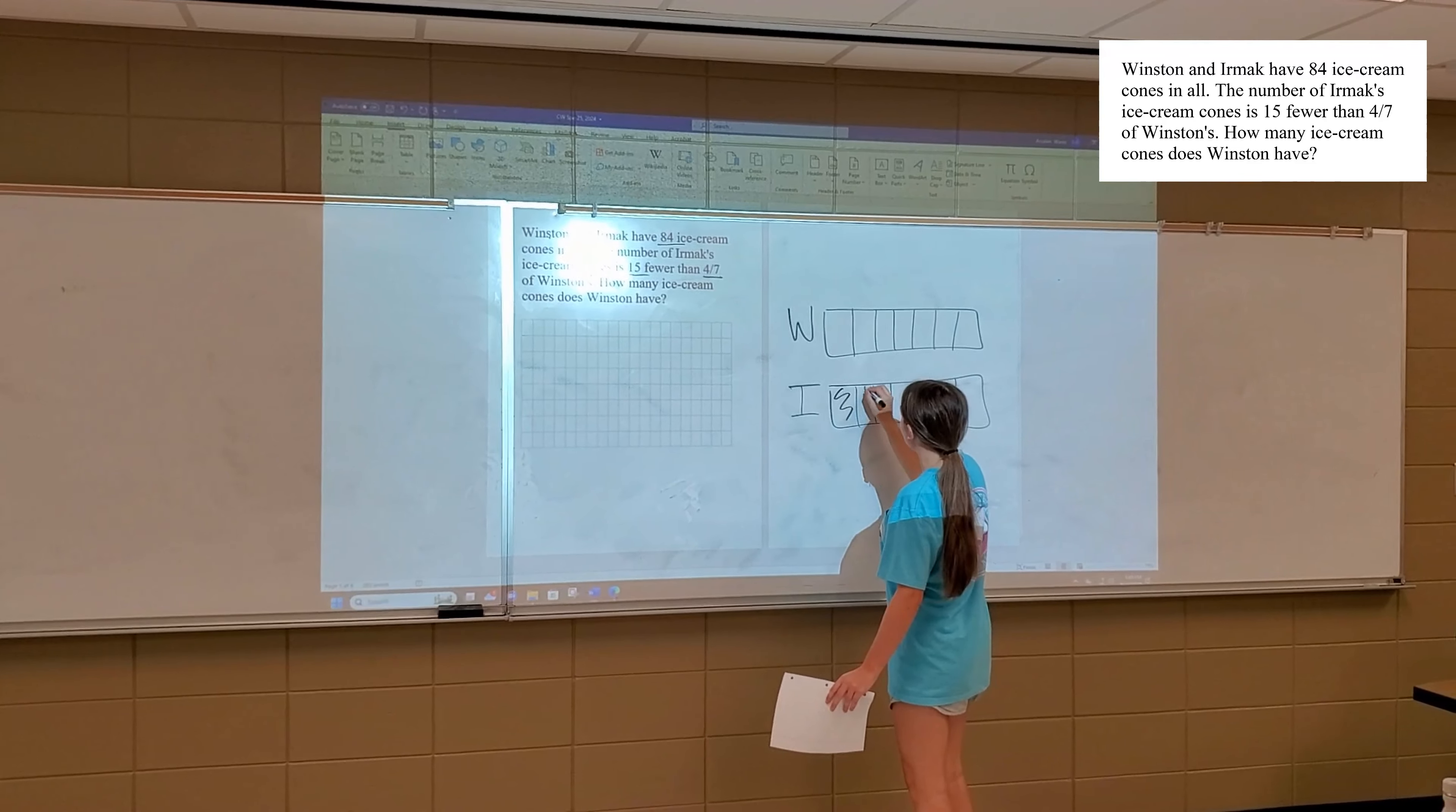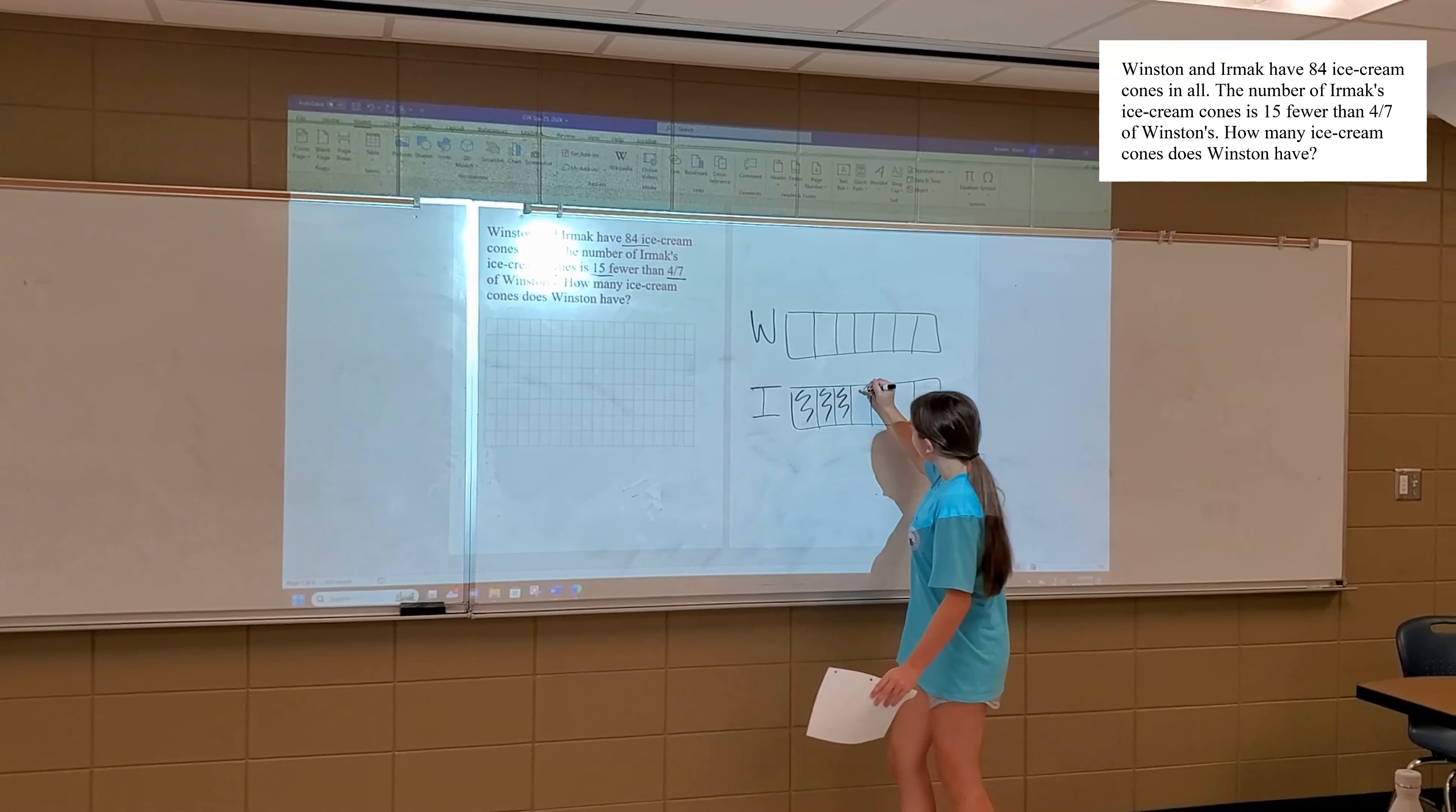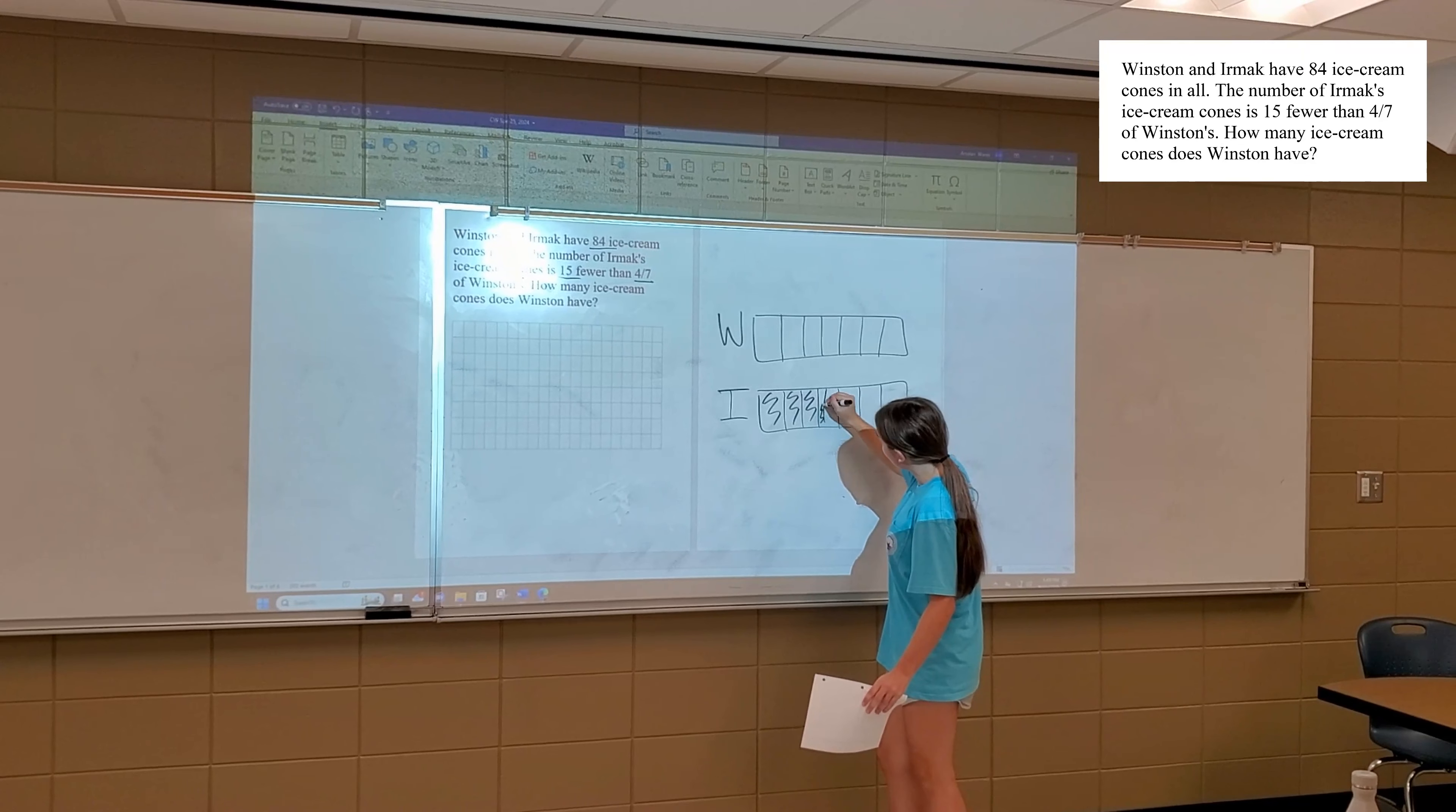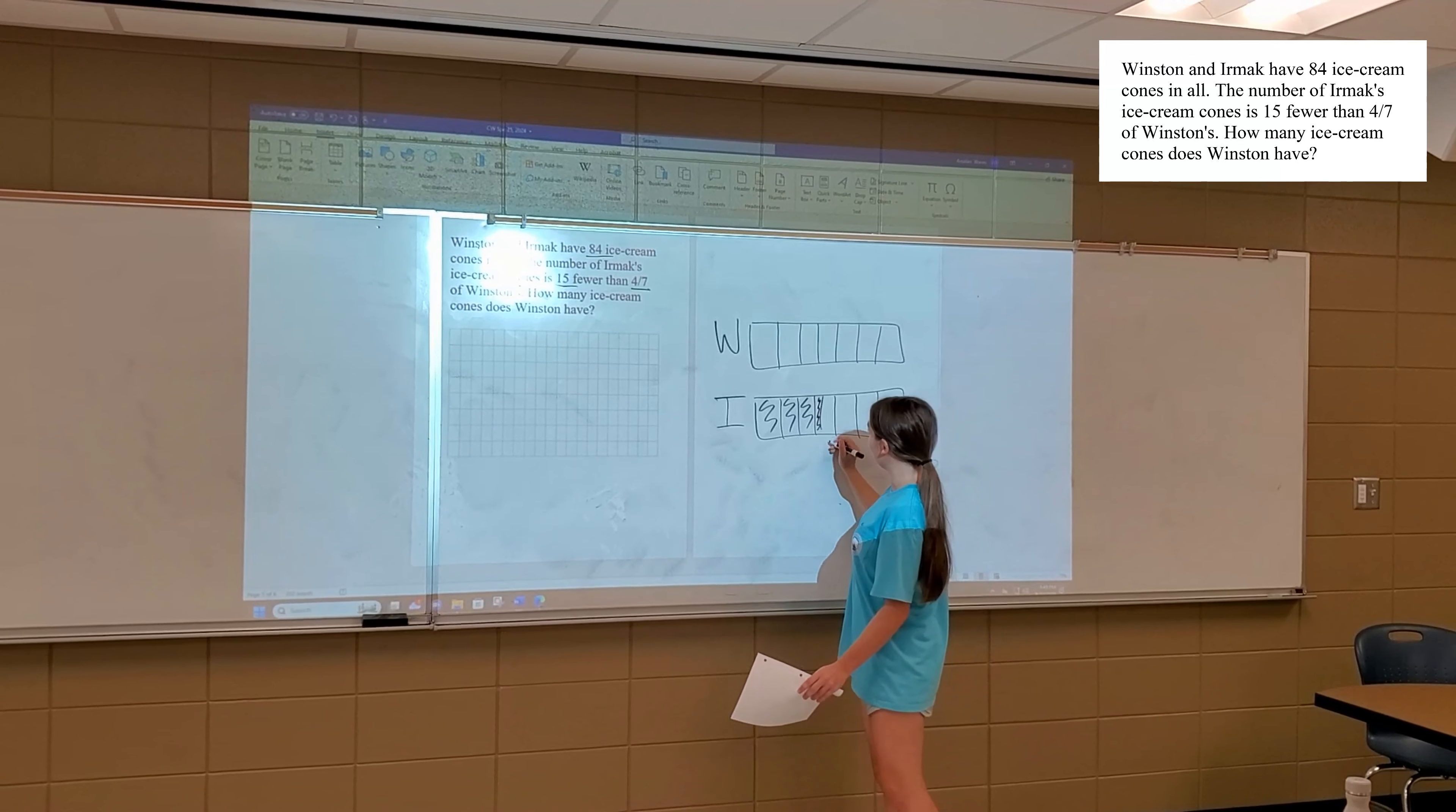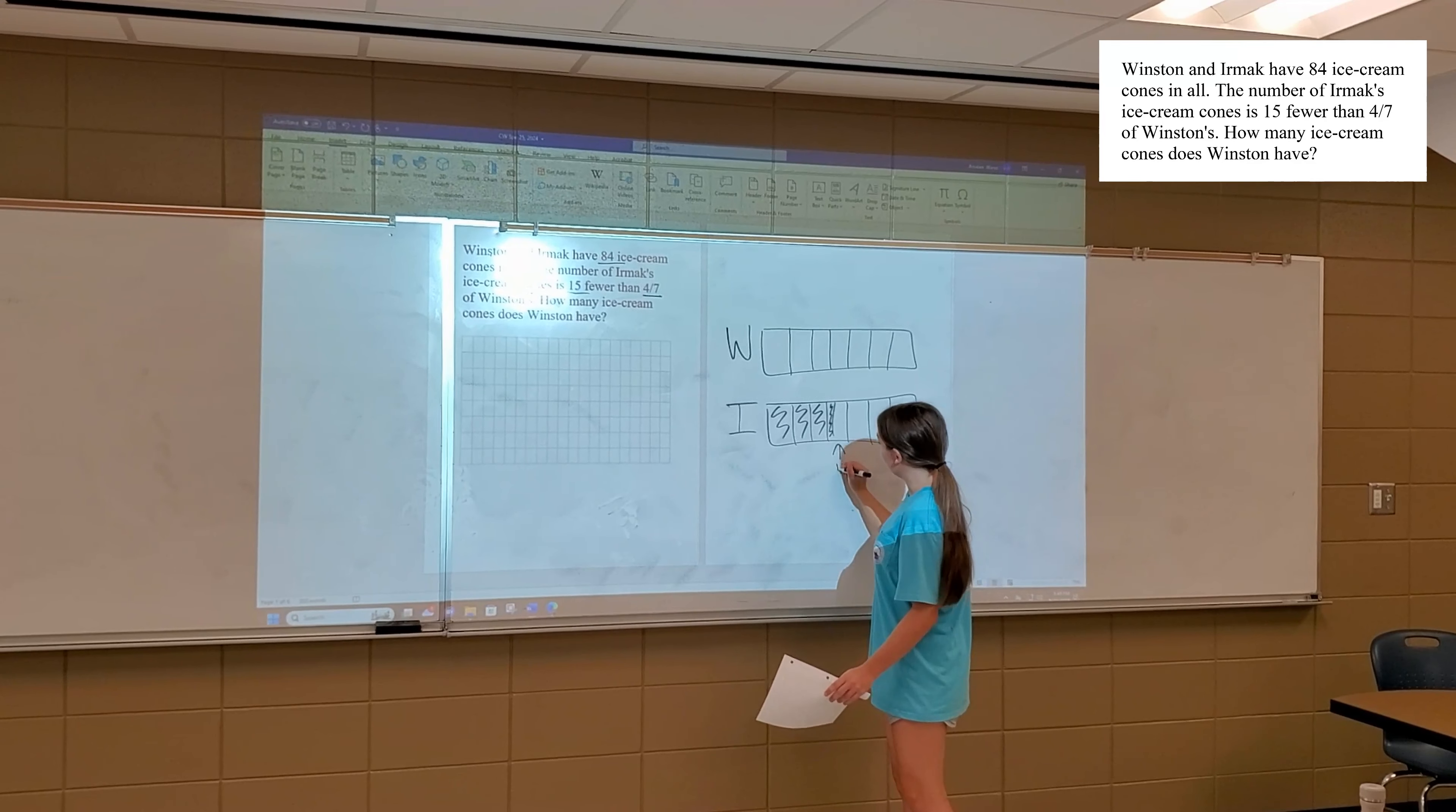So one, two, three, and then almost four sevens. And then I draw that this part right here is worth 15.